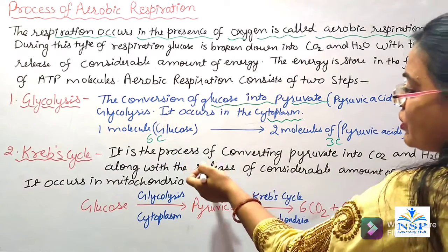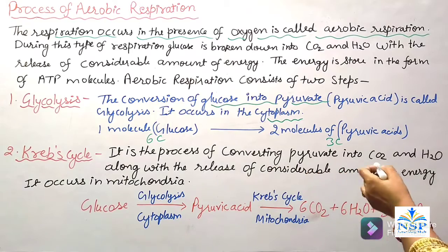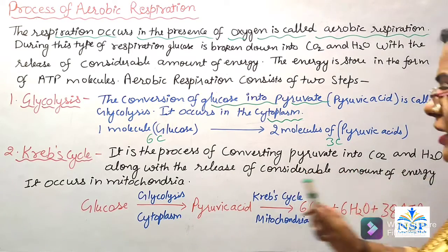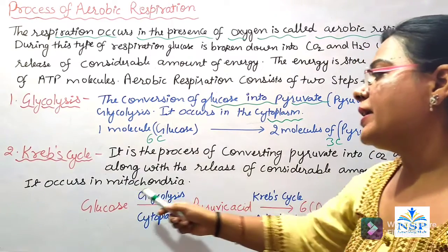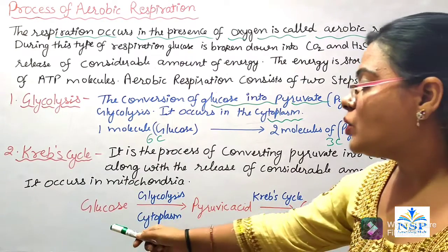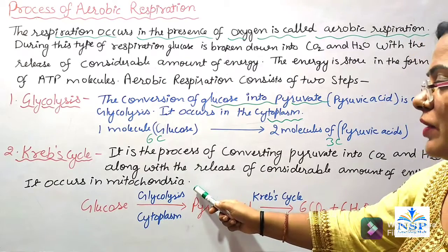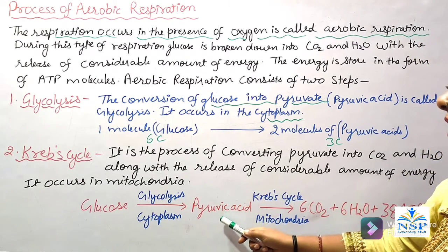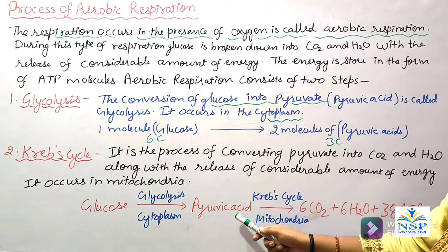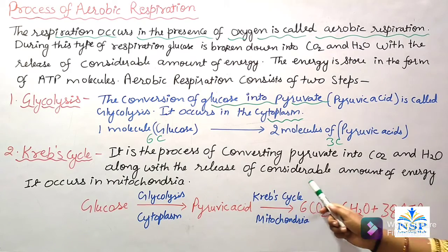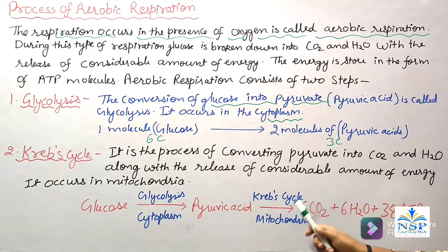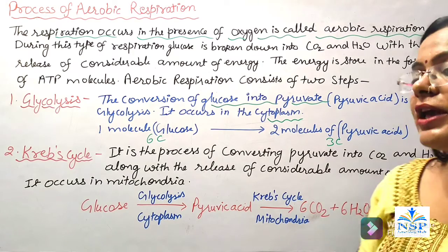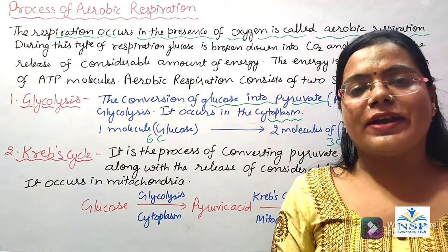Krebs cycle. It is the process of converting pyruvate into carbon dioxide and water, along with the release of a considerable amount of energy. It occurs in the mitochondria. Glucose, in the process of glycolysis in the cytoplasm, changes into pyruvic acid, and the pyruvic acid changes into carbon dioxide and water in the Krebs cycle present in the mitochondria of the cell. 38 ATP molecules are released in the form of energy.